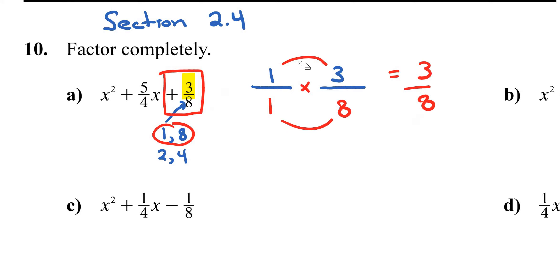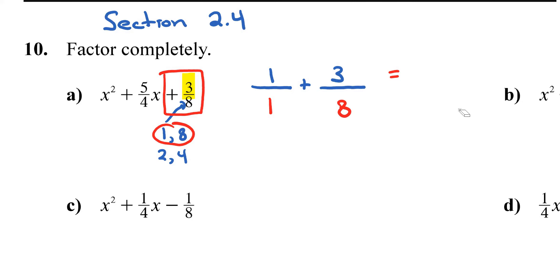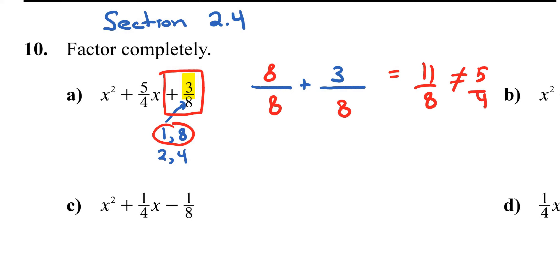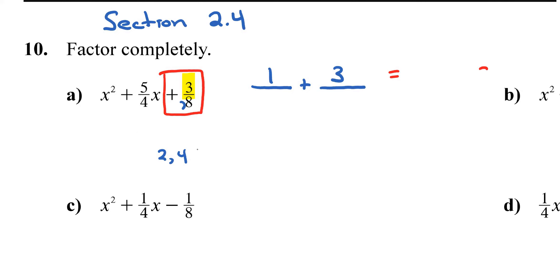Now the question is: if I add 1/1 and 3/8, do I get 5/4? If I multiply through by 8, I get 8/8 and adding gives 11/8, which definitely does not equal 5/4. So this 1 over 8 combination will not work. Let me go ahead and use the second combination, which is 2 and 4.